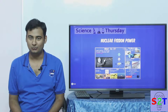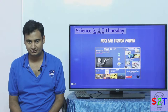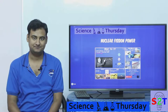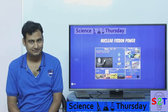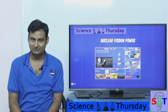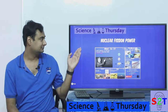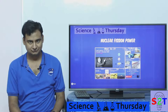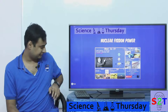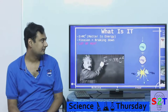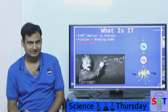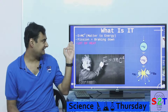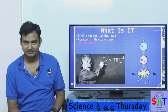Hello YouTube viewers, welcome to my show Science Thursday. In today's episode we're going to take a look at nuclear fission power. So let's dive right into it. What it is is very simple — it's E equals MC squared.